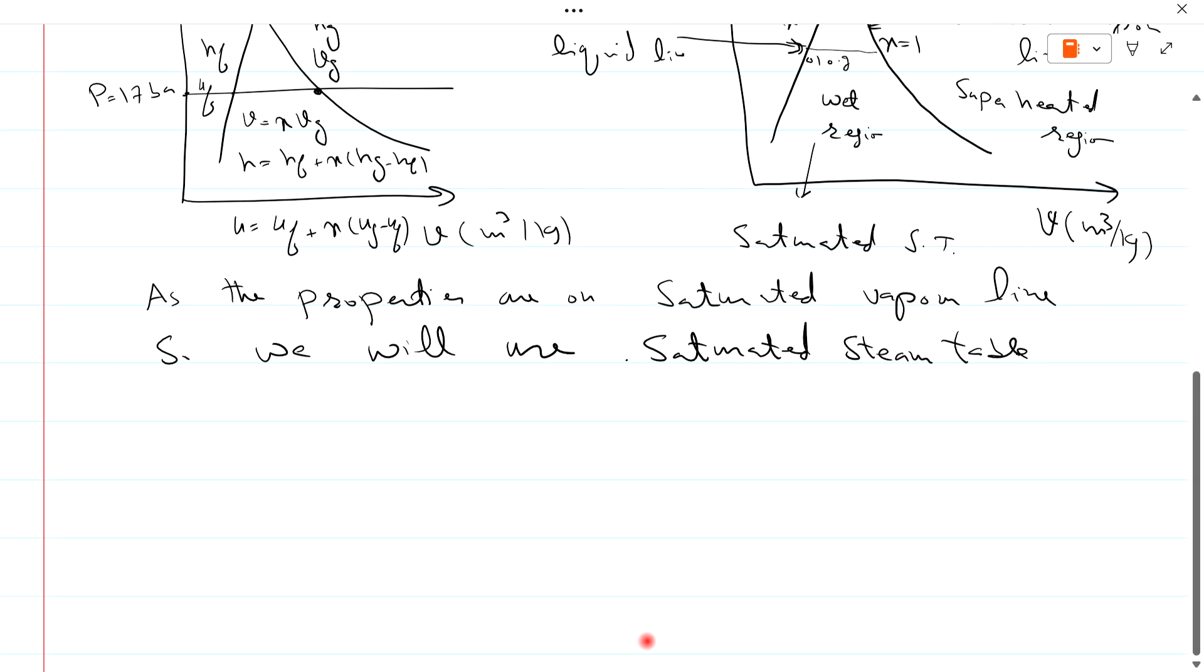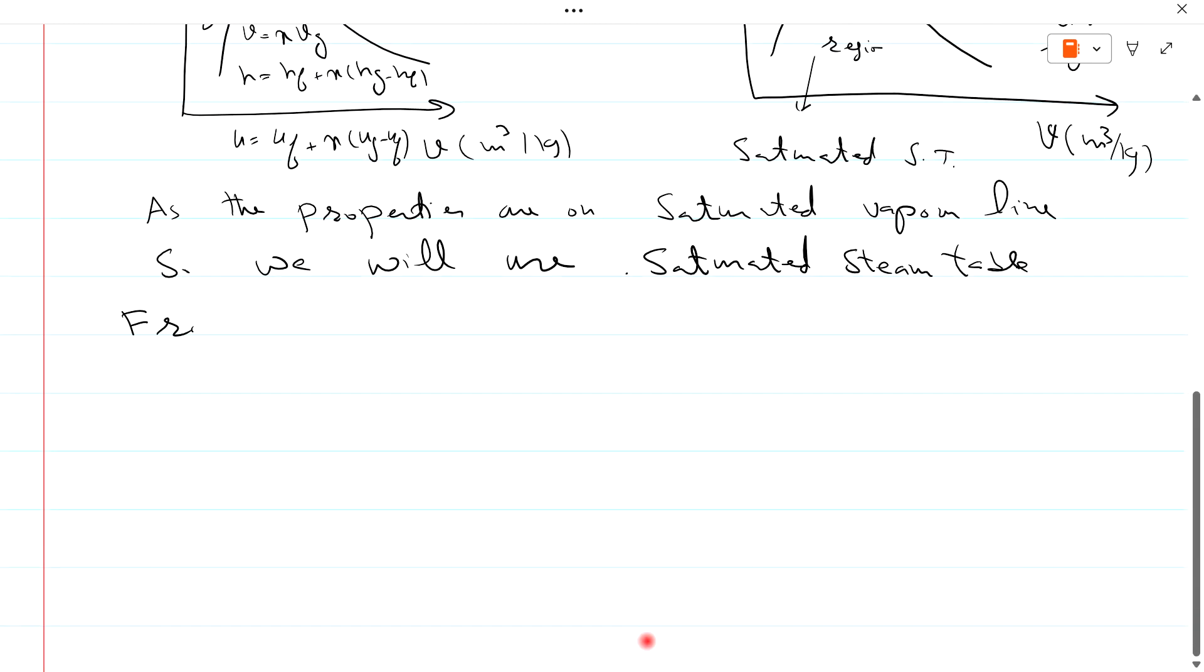From saturated steam table at pressure is equal to 17 bar, V is equal to Vg is equal to 0.1167 meter cube per kg.